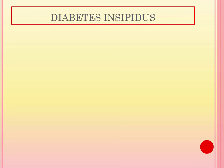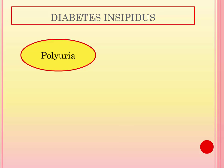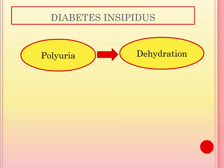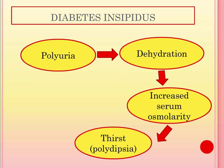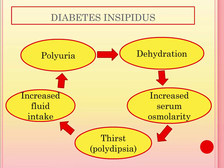Even though diabetes insipidus has nothing to do with blood sugars, you will see some symptoms common with diabetes mellitus. There will be polyuria, because there is no ADH or vasopressin to keep fluid in the body, so the person will be producing a lot of urine. They will become dehydrated, their serum osmolarity will increase, the thirst center is stimulated, and the client will experience polydipsia. However, there is no polyphagia, unlike the 3 Ps with diabetes mellitus, and blood sugar is unrelated.